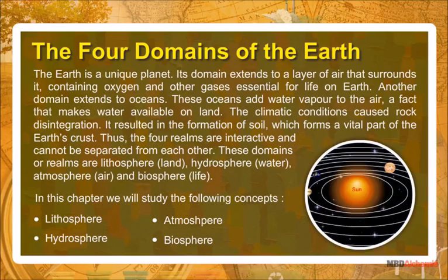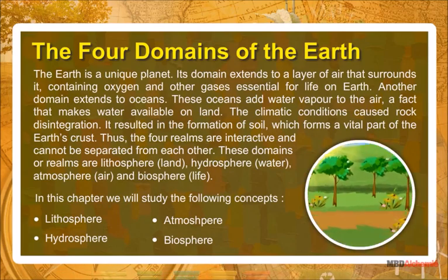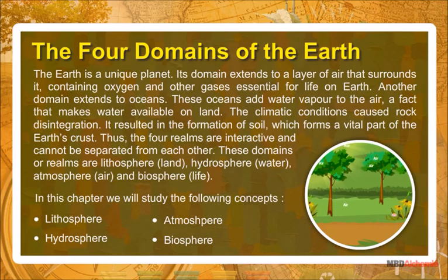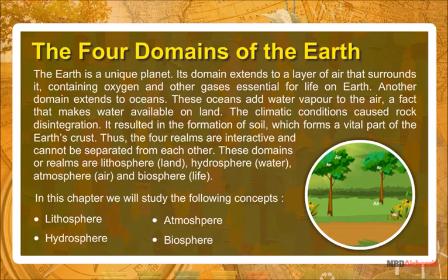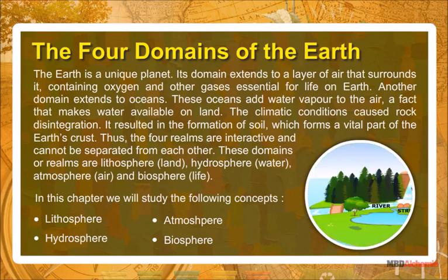The Earth is a unique planet. Its domain extends to a layer of air that surrounds it, containing oxygen and other gases essential for life on Earth. Another domain extends to oceans; these oceans add water vapor to the air, a fact that makes water available on land. The climatic conditions caused rock disintegration, resulting in the formation of soil, which forms a vital part of the Earth's crust.